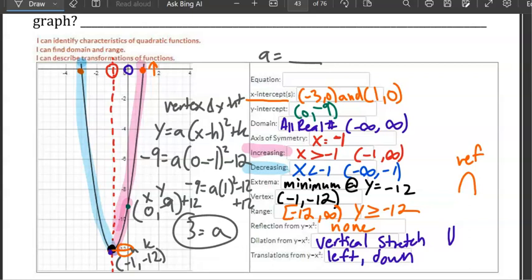1 times 1 is just 1, and 1a is still just a. A is 3, and it's opening upwards, so it's a positive 3. The equation is y equals 3(x + 1)² - 12.